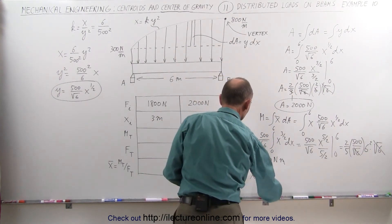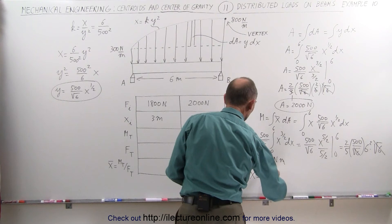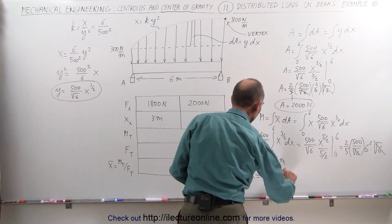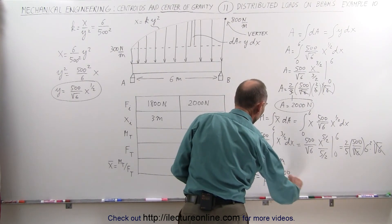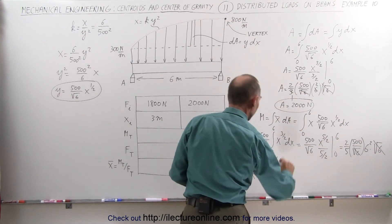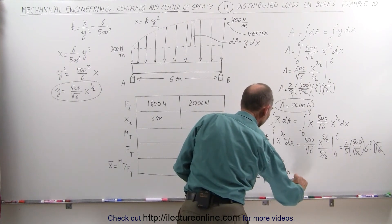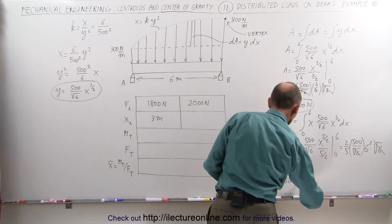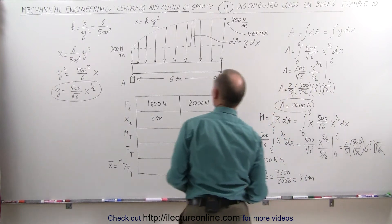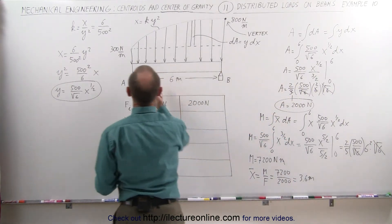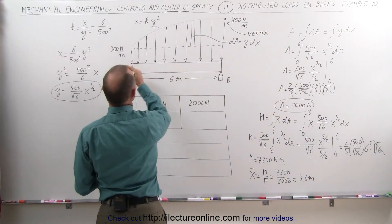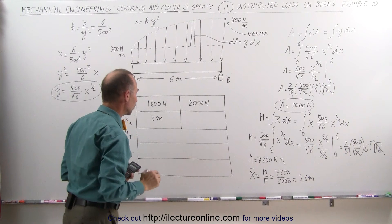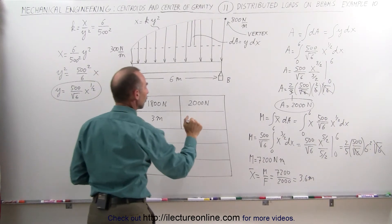To find the x-coordinate of the centroid of the curved portion, we divide the moment by the total force: 7200 divided by 2000 equals 3.6 meters. So 3.6 meters from the left is the centroid of the top curved portion of the load distribution.